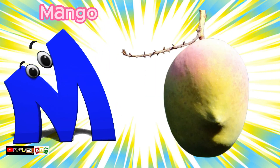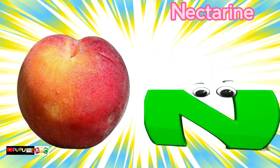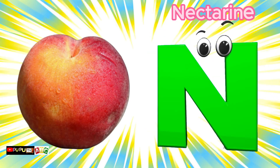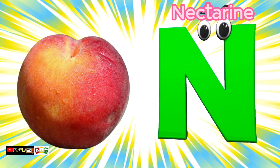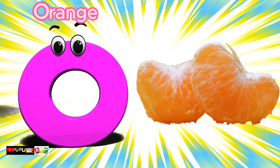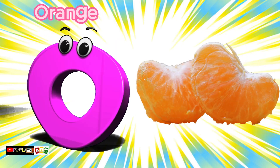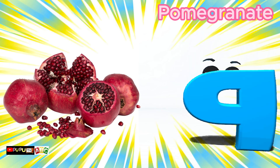M is for Mango, Mango. N is for Nectarine, Nectarine. O is for Orange. P is for Pomegranate.